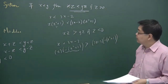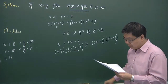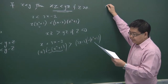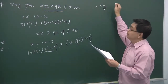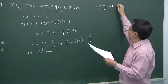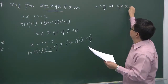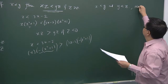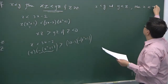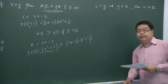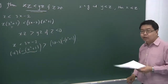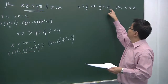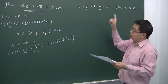The third property says that if x is less than y and y is less than z, then x will be less than z. This is sometimes called the transitive property — if x is greater than y and y is greater than z, then x will be greater than z.